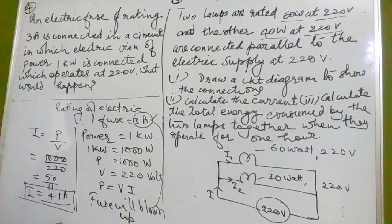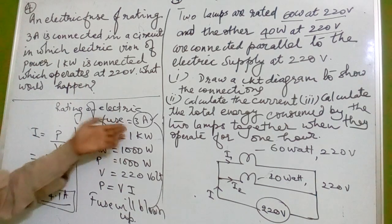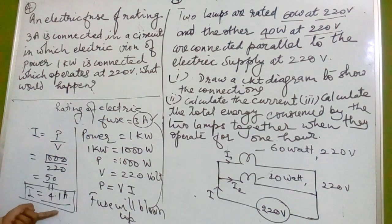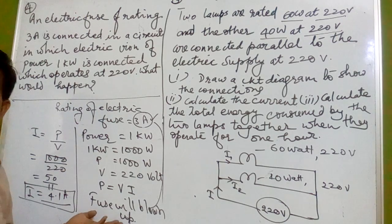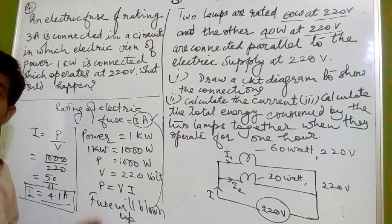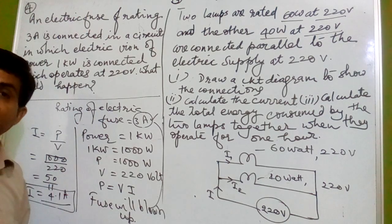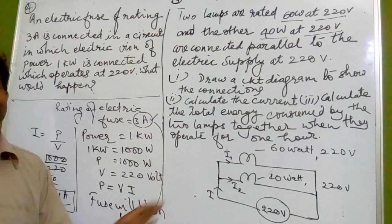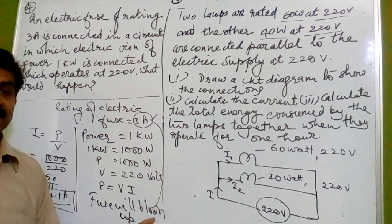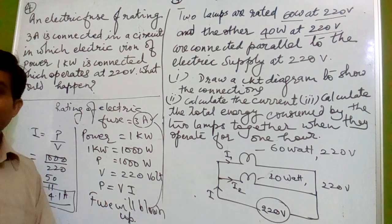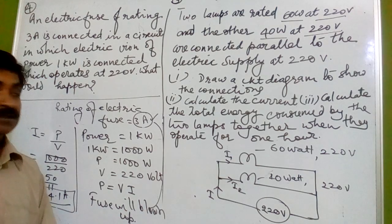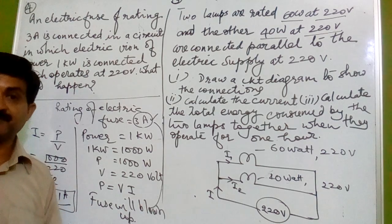The fuse will protect the device because the fuse rating is 3 ampere but the iron draws 4.1 ampere. When this excessive current flows, the fuse heats up, melts, and breaks the connection. This is the primary protection that the fuse provides.